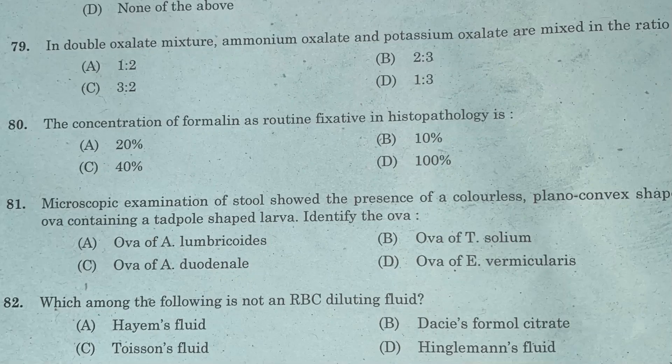Question 79: In double oxalate mixture, ammonium oxalate and potassium oxalate are mixed in the ratio — Option A: 1:2. Option B: 2:3. Option C: 3:2. Option D: 1:3. Answer is Option C, 3:2.